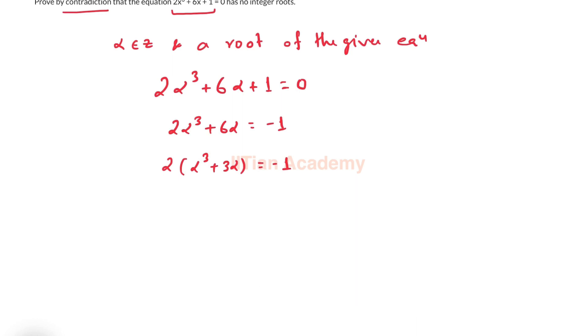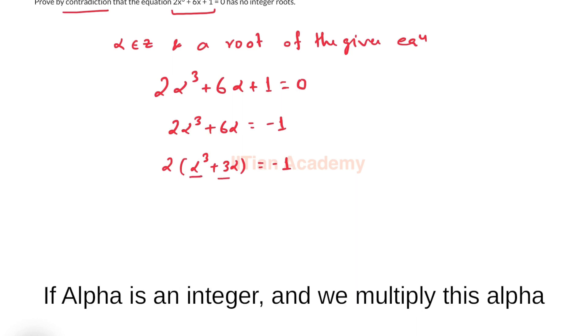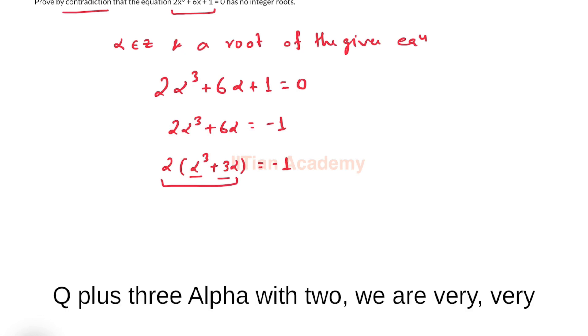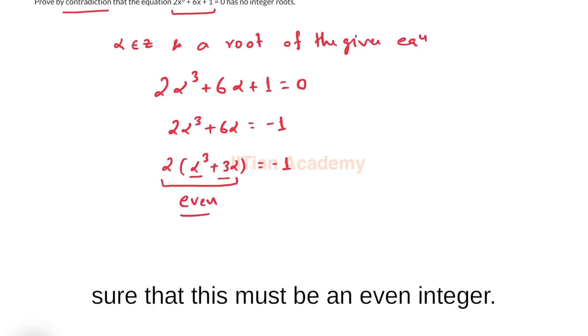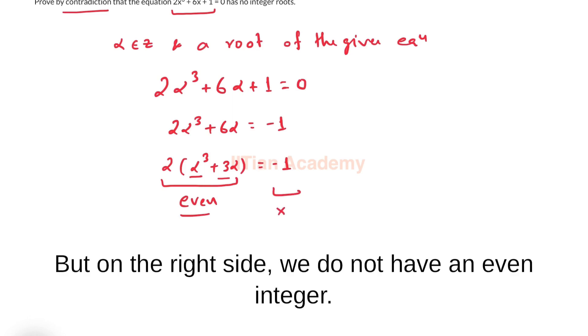Now alpha is an integer. If alpha is an integer and we multiply this alpha cube plus 3 alpha with 2, we are very sure that this must be an even integer. But on the right side we do not have an even integer.